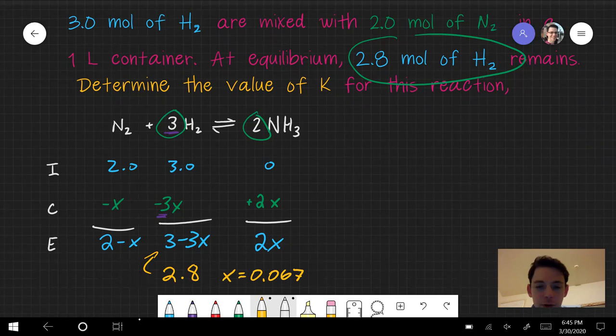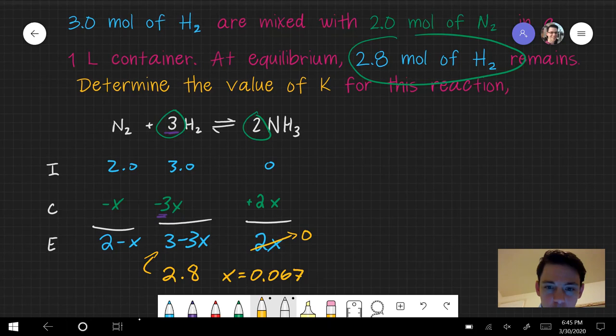So I could simply plug those in to solve for the others. Let's see what we get. 0.067 times 2, so this is going to be 0.134. This is going to be 1.93. So I've got my final values for all of those.